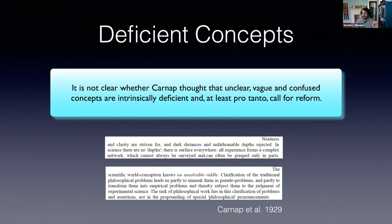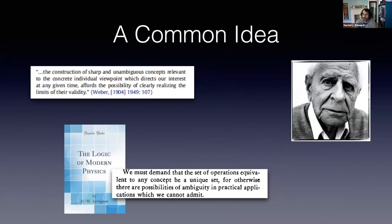On philosophy the manifesto says: 'The scientific world conception knows no unsolvable riddle. Classification of the traditional philosophical problems leads us partly to unmask them as pseudo-problems and partly to transform them into empirical problems.' This again suggests Carnap takes clarity of concepts to be intrinsically valuable, giving us a potential reason to conceptually reform unclear concepts. Carnap was not the only one to hold such views — it's a very common idea that sharp, clear, and non-confused concepts are intrinsically valuable.